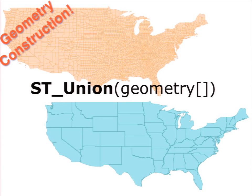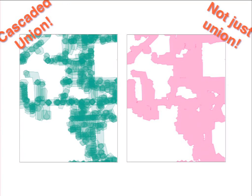The ST_Union function takes small things and melts them into big things — for instance, taking the 3,000-odd counties of the United States and merging them up into the 50 states. Under the covers, PostGIS uses a cascaded union because someone sent us an example with very complex data and asked why union was so slow. The answer was we needed to process data in a more sensible way, so we built cascaded union.